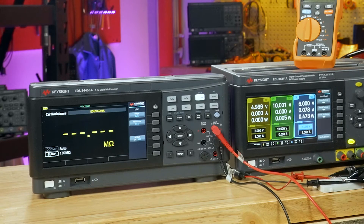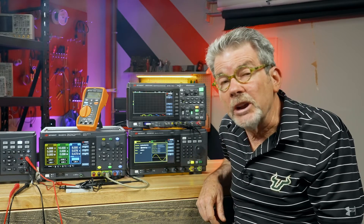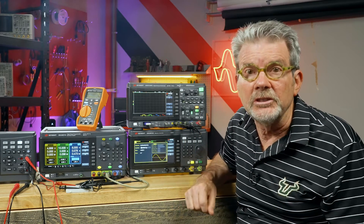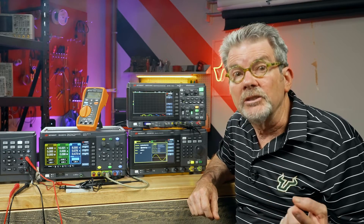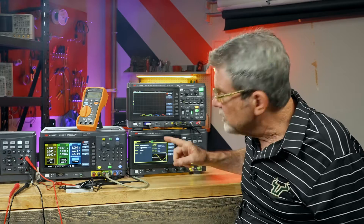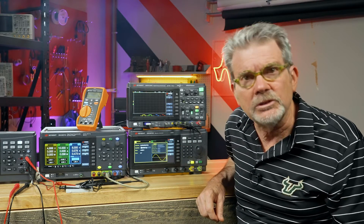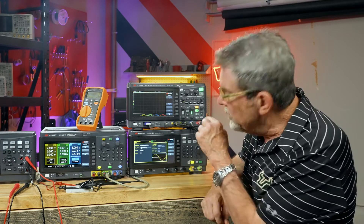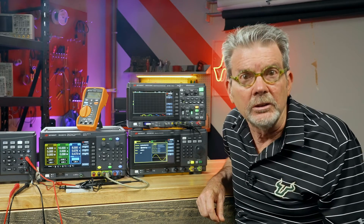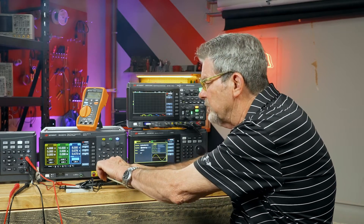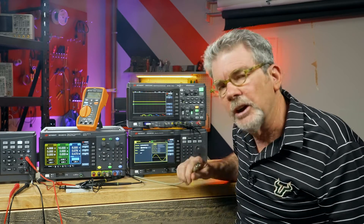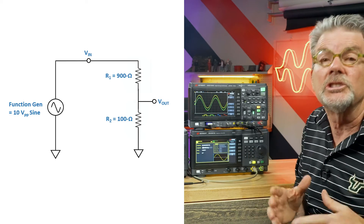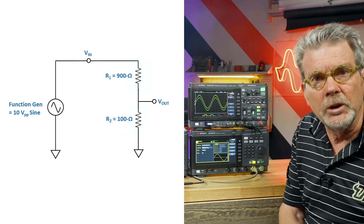Function generators — sometimes called waveform generators or arbitrary waveform generators — produce dynamic inputs for your circuit designs. You'll probably be using these a lot for your lab experiments. These instruments can generate repetitive sine waves, square waves, and triangular waves, as well as other wave shapes of various amplitudes and frequencies. I'm going to disconnect the DC power supply from my resistive divider circuit and plug in the function generator, which I've already set to generate a 10-volt peak-to-peak, 20 kilohertz sine wave.